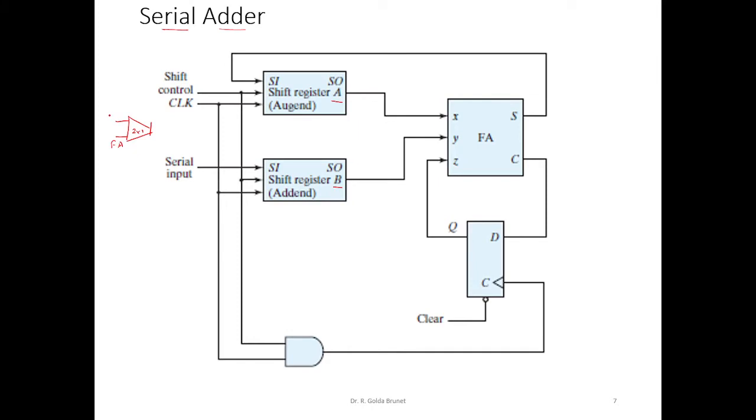The external serial input is going to load the register A with some initial value. And then once we start doing the serial addition, the result of the operation will be stored in the shift register A.